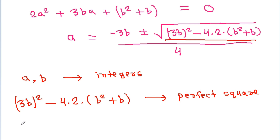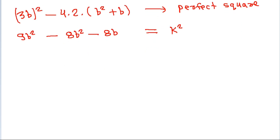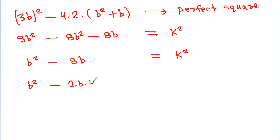The discriminant simplifies as: 9b squared minus 8b squared minus 8b equals b squared minus 8b, and this must equal k squared for some integer k. So b squared minus 8b equals k squared, where b squared minus 8b is 2 times b times 4.